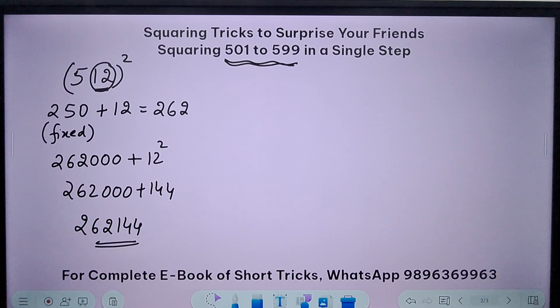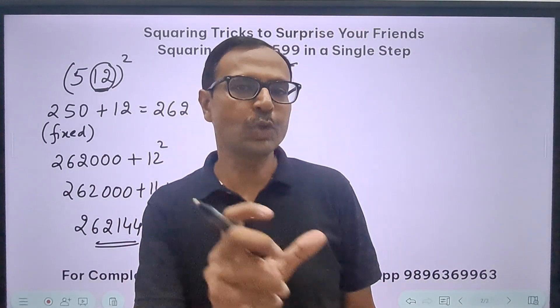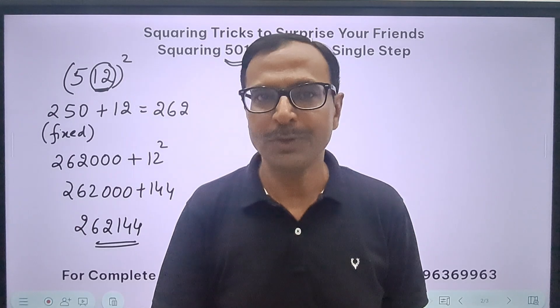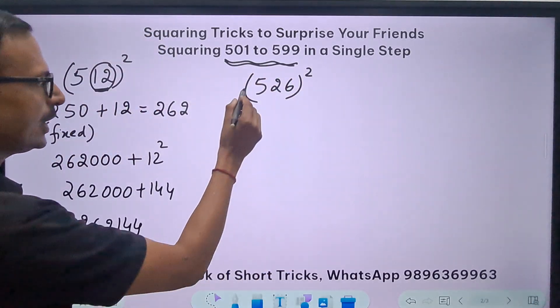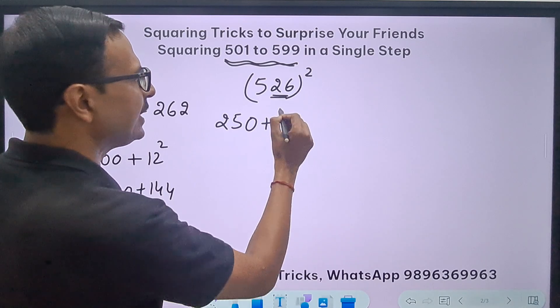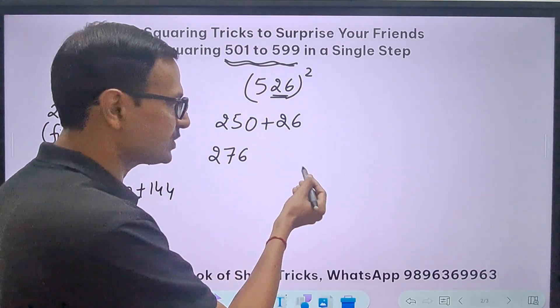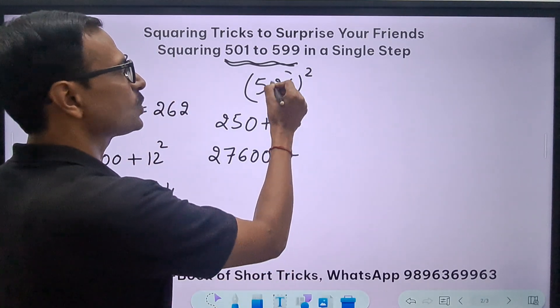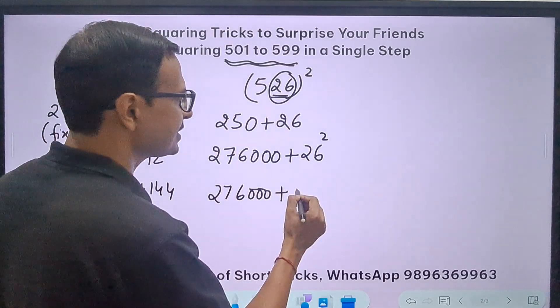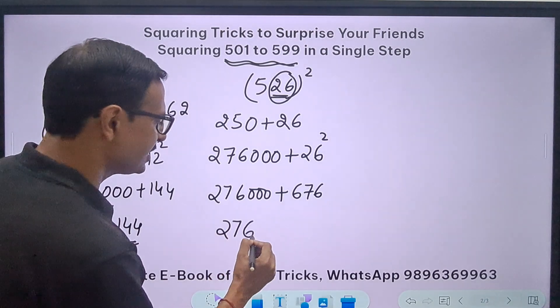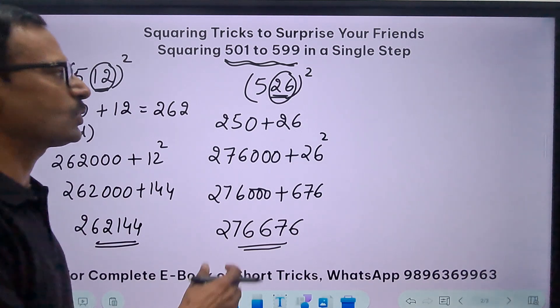You can check using calculators and you'll find the answer very accurate. You've seen like so many steps there, right? Slowly I'm going to skip steps now, and when we do the last question you'll watch the magic. Let's take another number like 526 and try to find the square. I told you 250 is a fixed number. Here we have 26, so I'll add 26 to this. I'll get 250 plus 26 is 276, and I'll multiply this by 1000, so three zeros, and add what? Add the square of this number, that is 26 square. This becomes 276 triple 0, and I remember the square of 26, it is 676. So my answer is 276676.